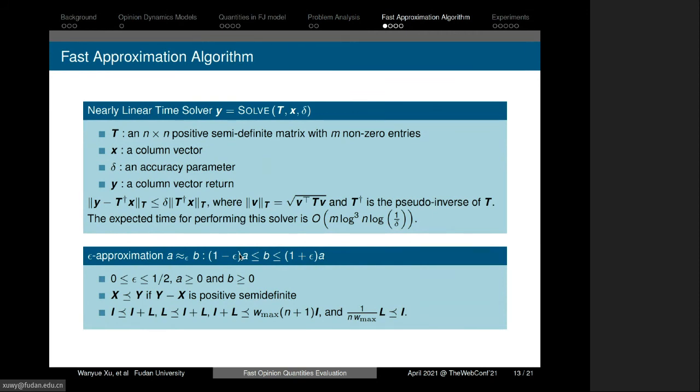Here is the nearly linear time solver with four parameters. T is an n times n positive semi-definite matrix with m non-zero entries. X is a column vector. Delta is an accuracy parameter. Y is a column vector returned from the solver. By using this solver we obtain a vector to approximate the expressed opinion value with theoretically guaranteed error delta. The expected time is nearly linear with the edge number.